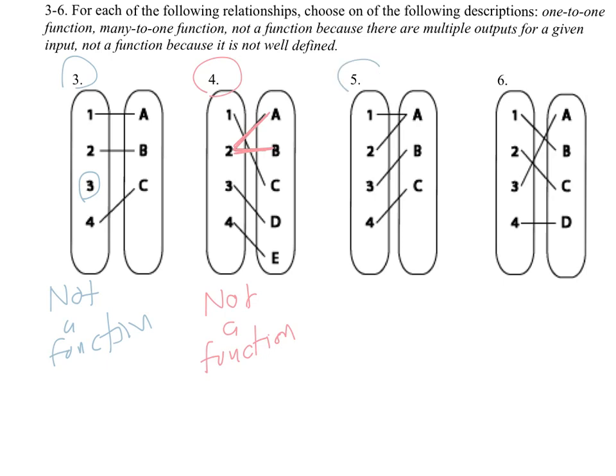If we look at example five, I see one, two, three, and four all have an output, and they all go to only one thing. Now, people get concerned that one and two are both going to A. That's okay. If I tell you the input is one, you know the output is A. There's no confusion.